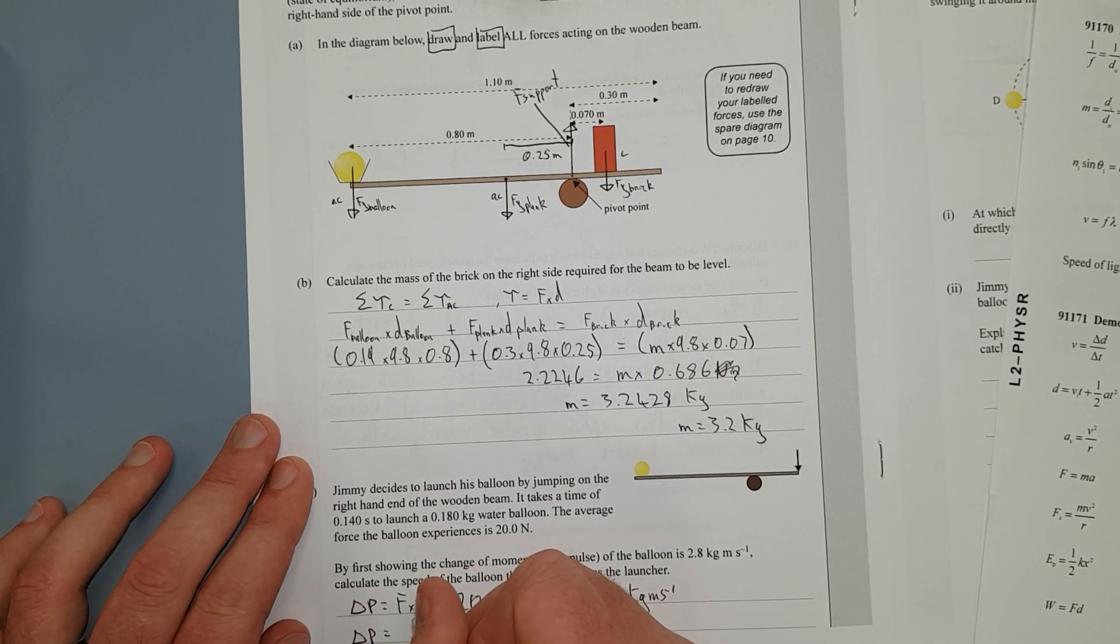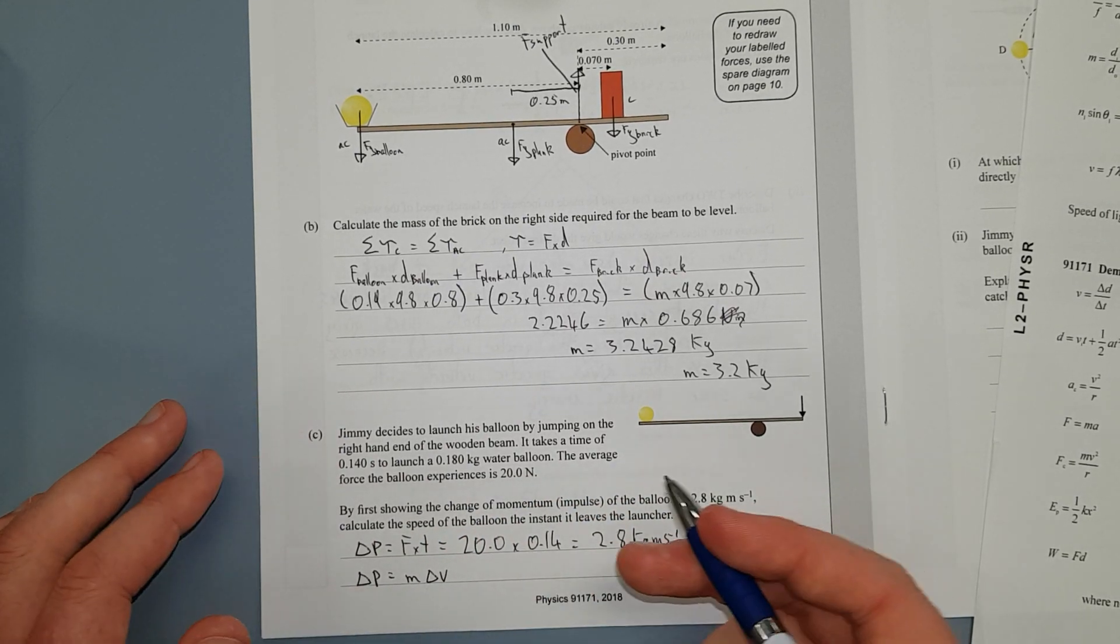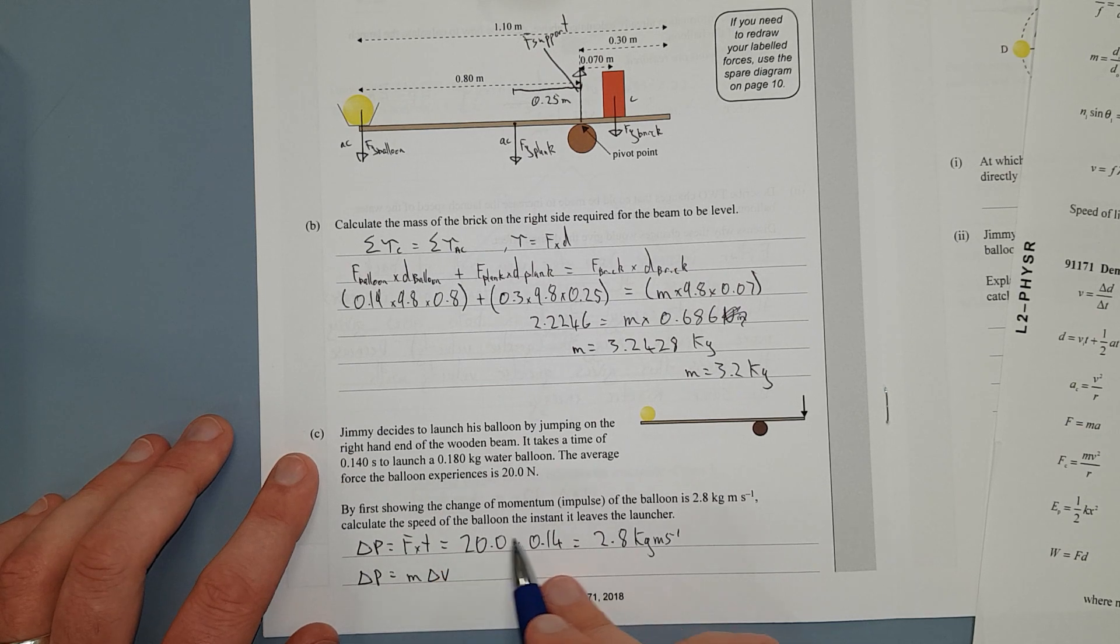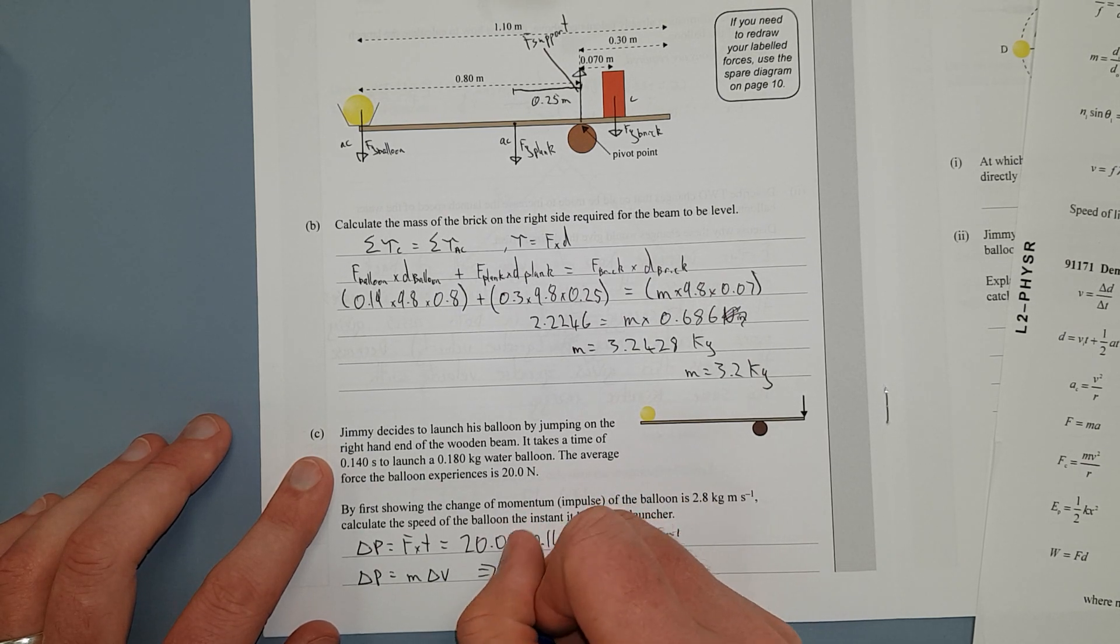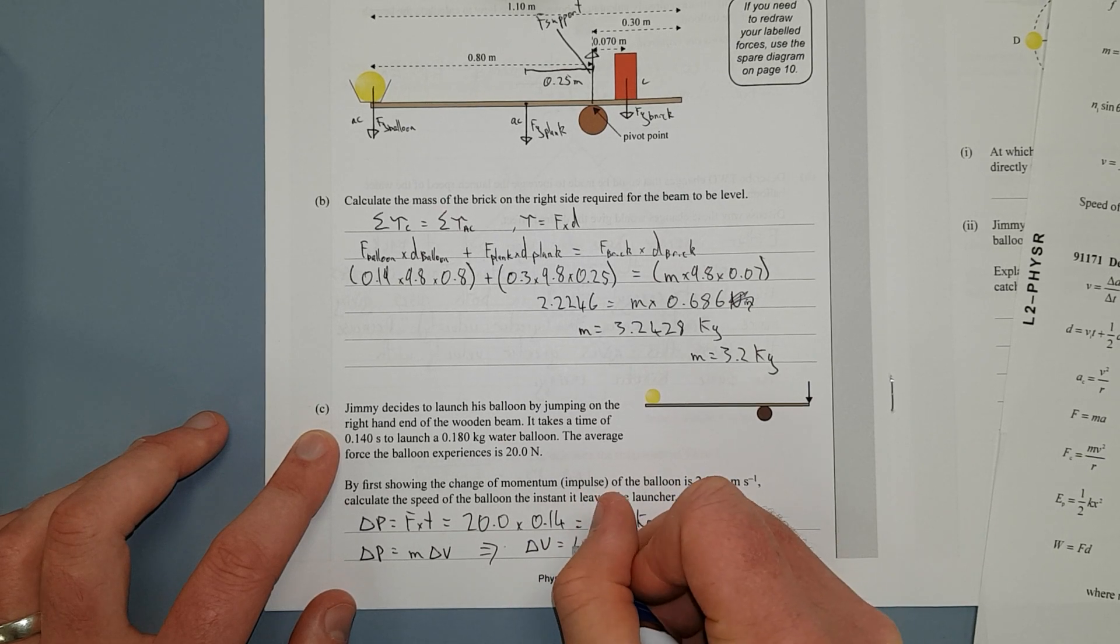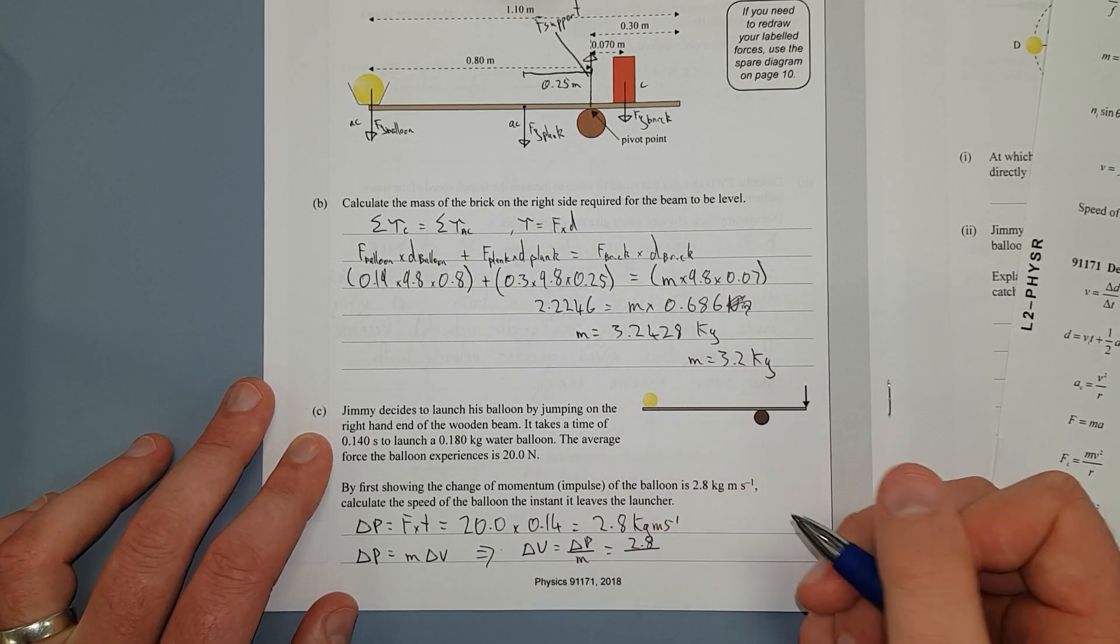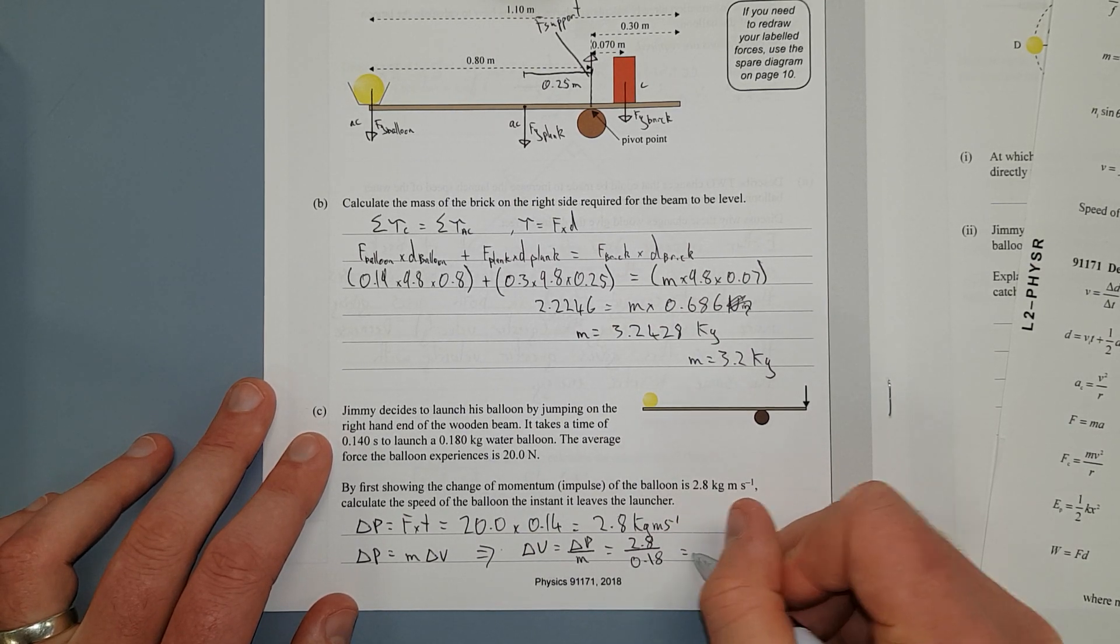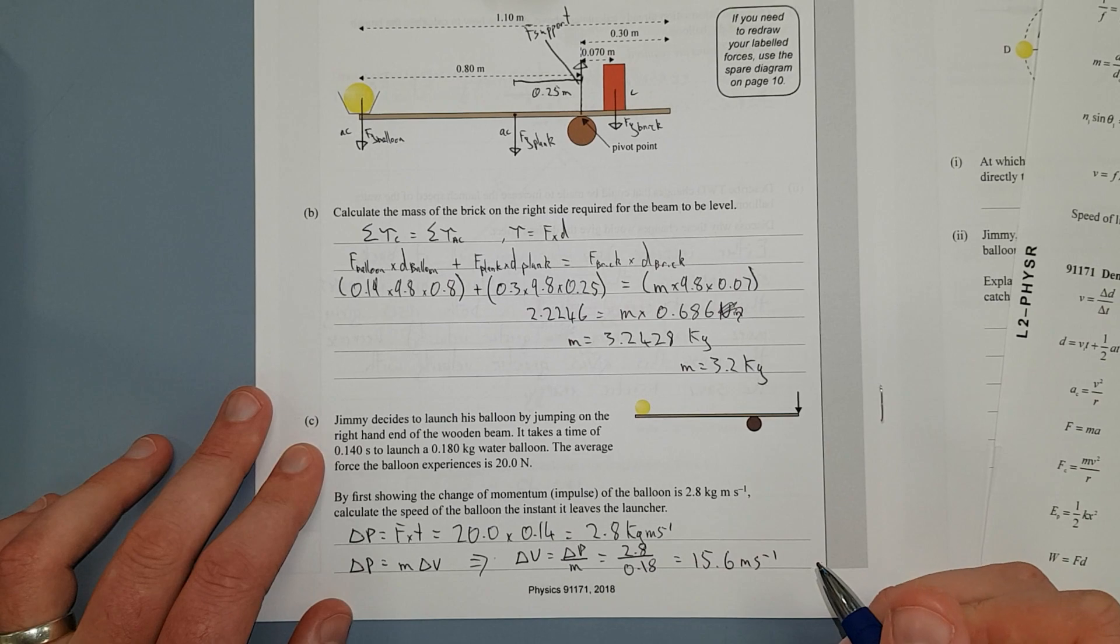Change of momentum also equals change in mass times change in velocity. I left the change in mass out because I know the change in mass, the mass isn't changing, it's the same water balloon, but the velocity changes. We can assume that, because that's what we're trying to find. Calculate the speed of the balloon instantly leaves the launcher. So in other words, change in velocity—let's chuck some arrows in there, I hope you can see that—change in velocity is equal to the change in momentum divided by the mass. There are other ways to do this, this is just the most intuitive way to do it. 2.8 divided by 0.18, 0.18, that gives me 15.6 meters per second.